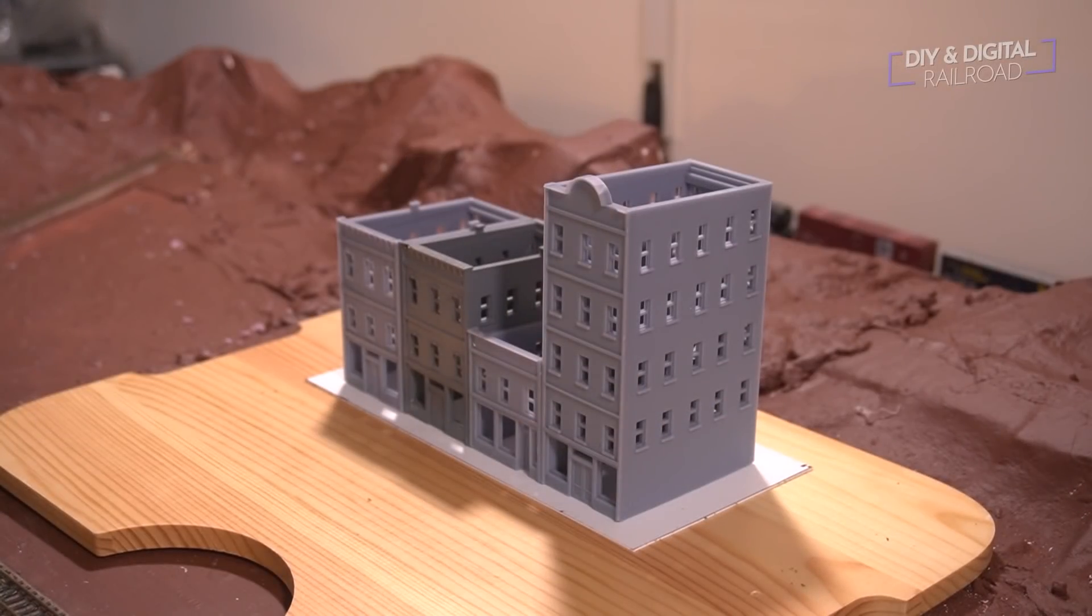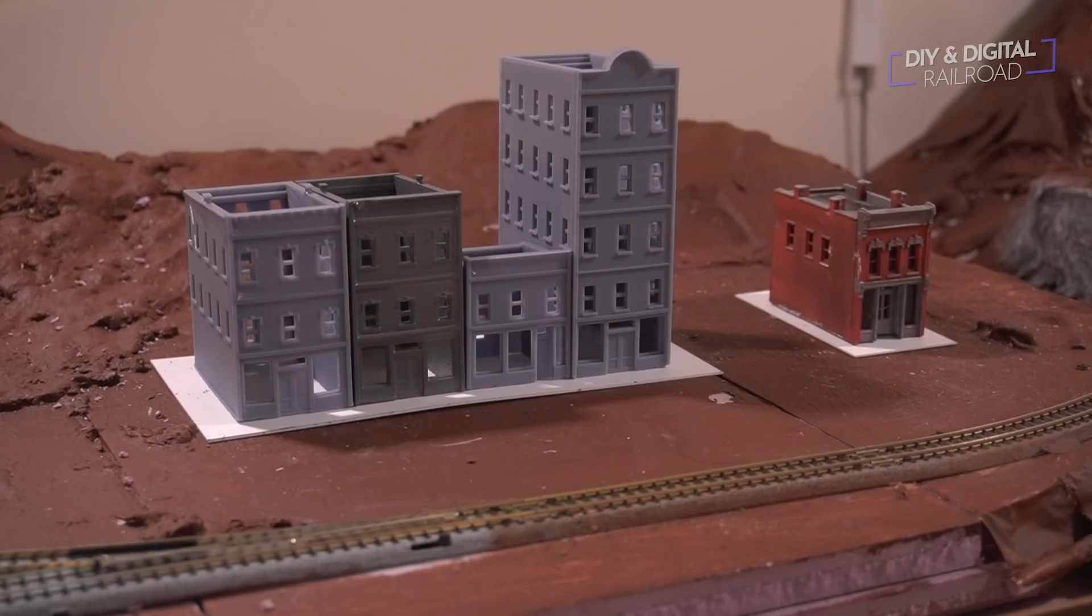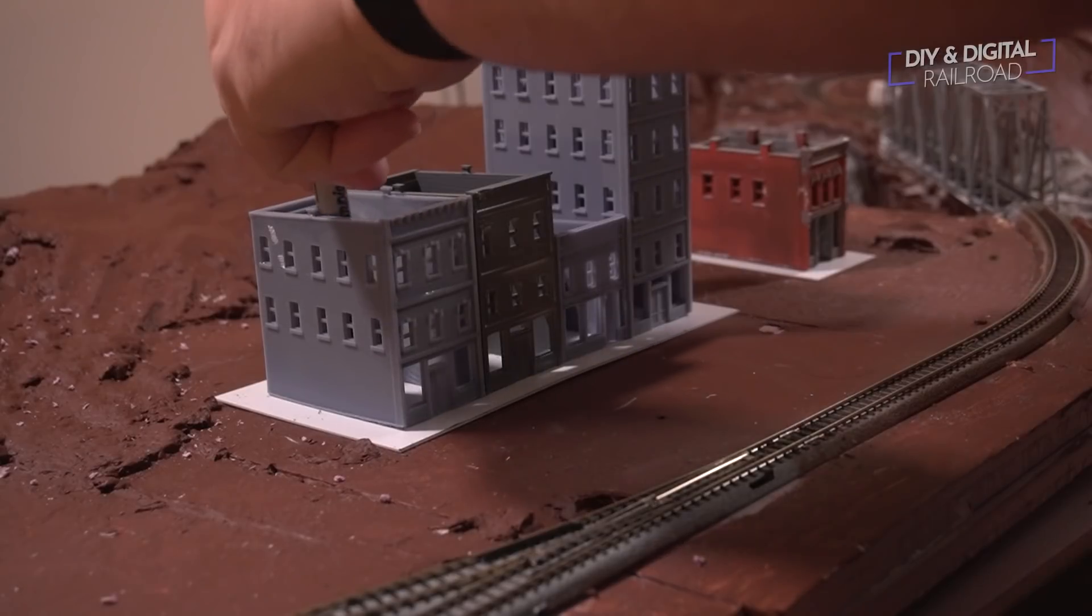Once that's done, I put the buildings back on just to make sure that I have the placement right and everything is the right size. And then, of course, I wouldn't be a good modeler if I didn't put it on the layout just to see what it looked like at first. You can see that I'm also doing another building, but we're not going to focus on that one too much.